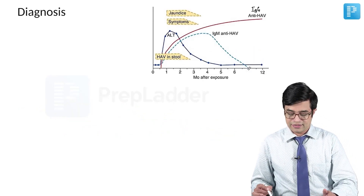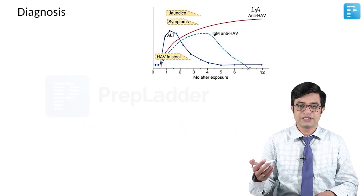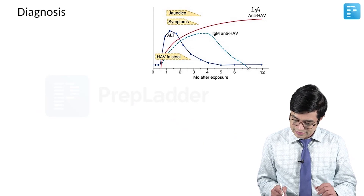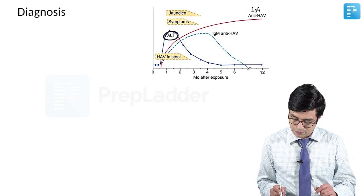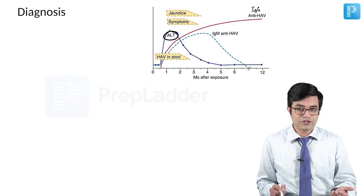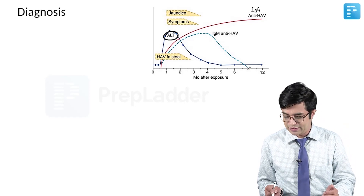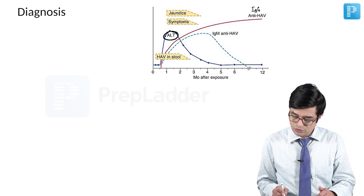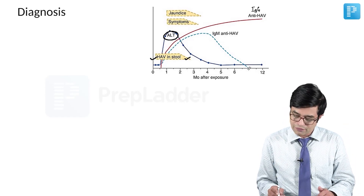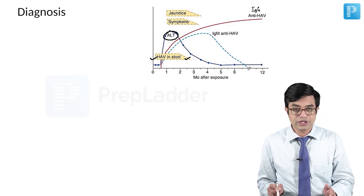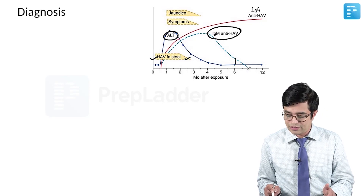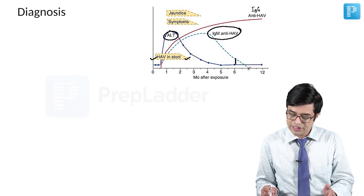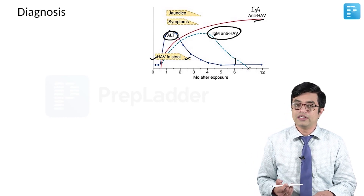Moving to diagnosis. ALT levels will peak about one and a half to two months after the entry of virus, then usually return to baseline. Hepatitis A viral stool excretion happens for about two to two and a half weeks after onset. Jaundice and symptoms last for 7 to 14 days. IgM-HAV antibody appears first; after six months its titers fall rapidly, whereas IgG-HAV tends to last throughout the lifetime.